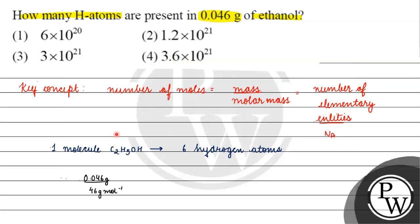C₂ means 12 × 2 = 24. 24 plus 6 equals 30, and oxygen is 16, so molar mass is 46 gram per mole.